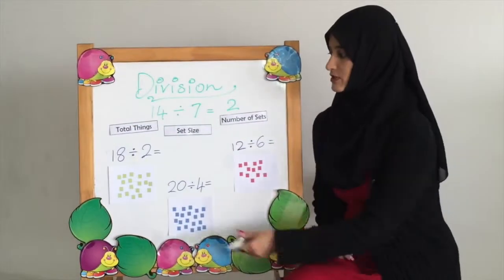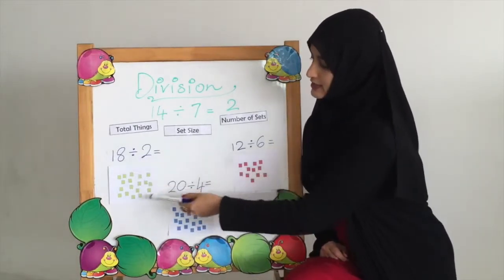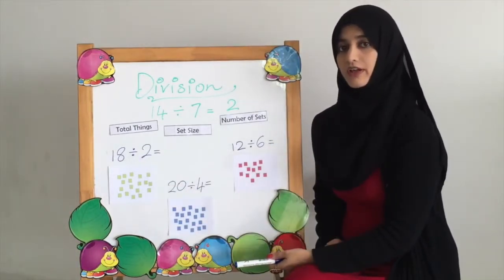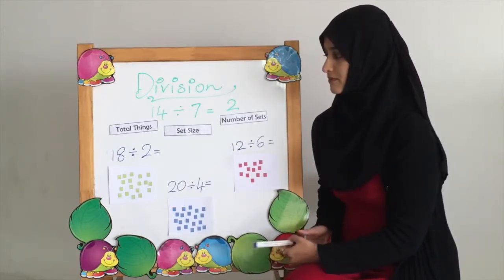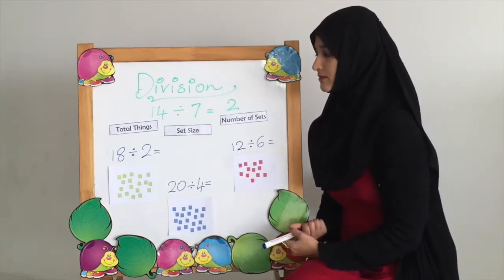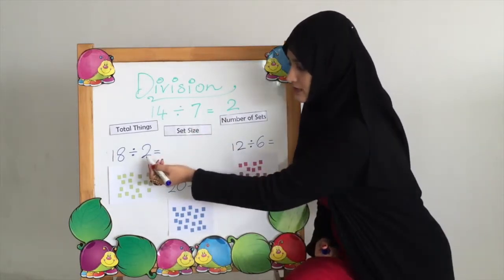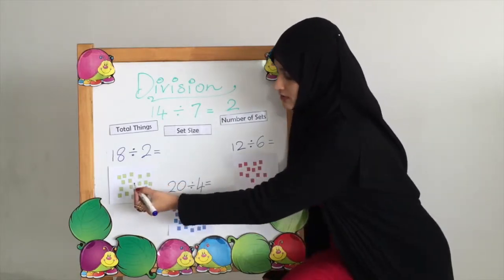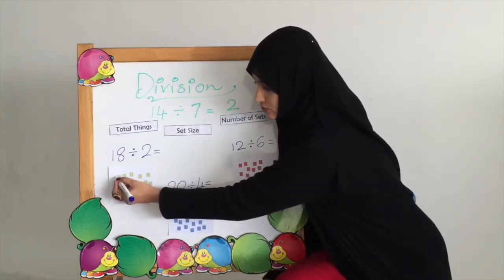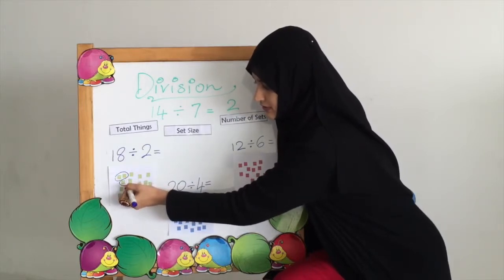The first question here is 18 divided by 2. We have 18 blocks here and we are going to count 2 blocks and make a set. The second number, as you can see, is the set size. The set size for this question is 2, so we count 2 blocks and make a set: 1, 2, and you continue.